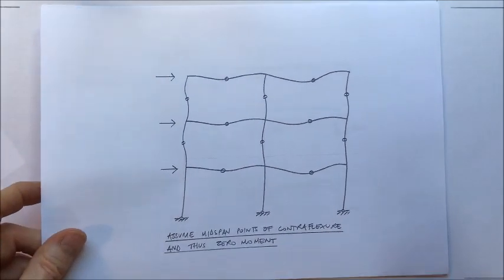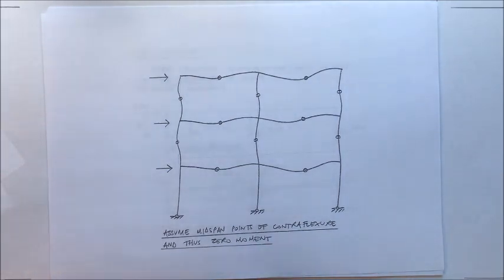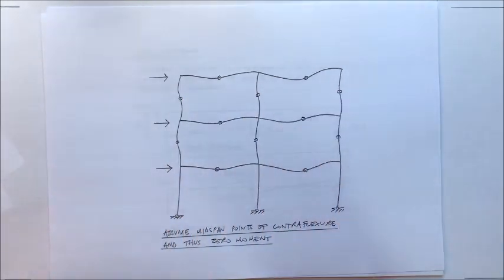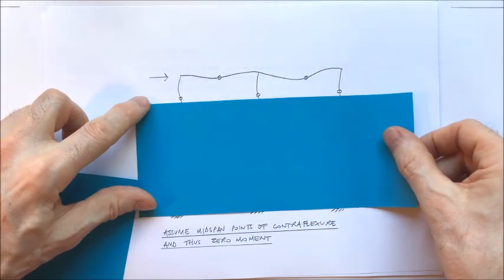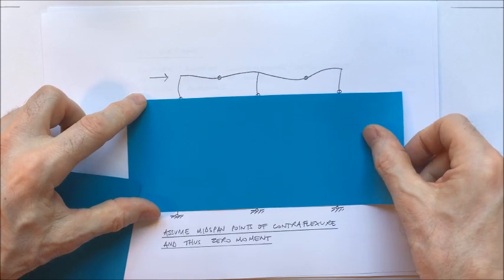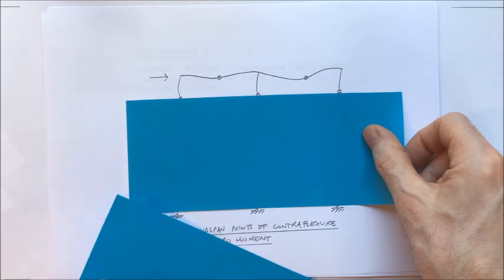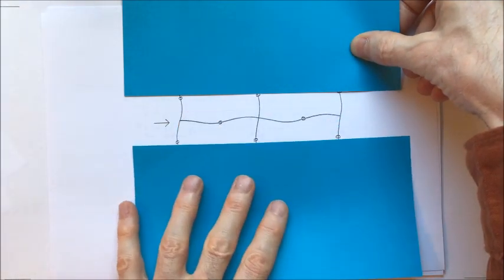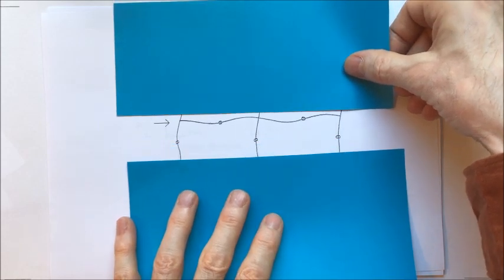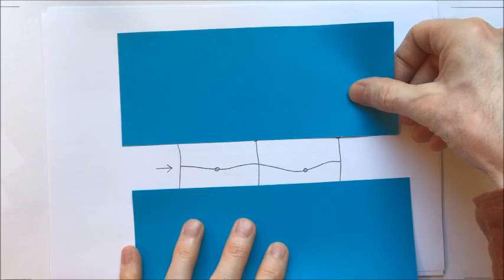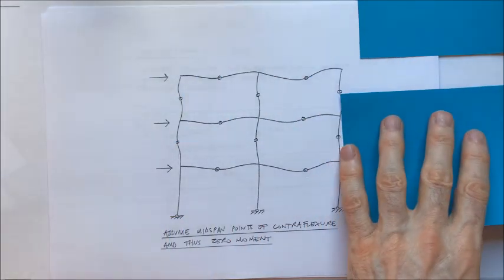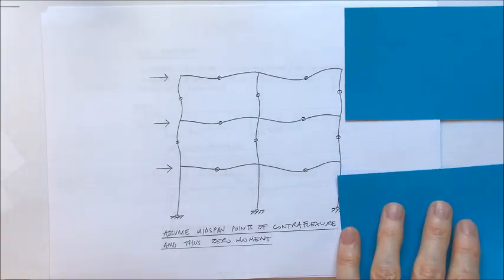So let's think about how we can develop subframes from these points of contra-flexure. We choose to create our subframes by cutting the structure at our pins because that simplifies our analysis — where we have a pin, there's no bending moment, and therefore that's one less calculation to worry about. An obvious place to start would be an upper frame based on the three pins in the three upper columns. Once we've done that, we can move down to the next subframe at the second floor with columns above and below, and then down to the first floor subframe going all the way down to the pinned bases. So we've got three subframes: the upper one, the second floor one, and the first floor subframe.